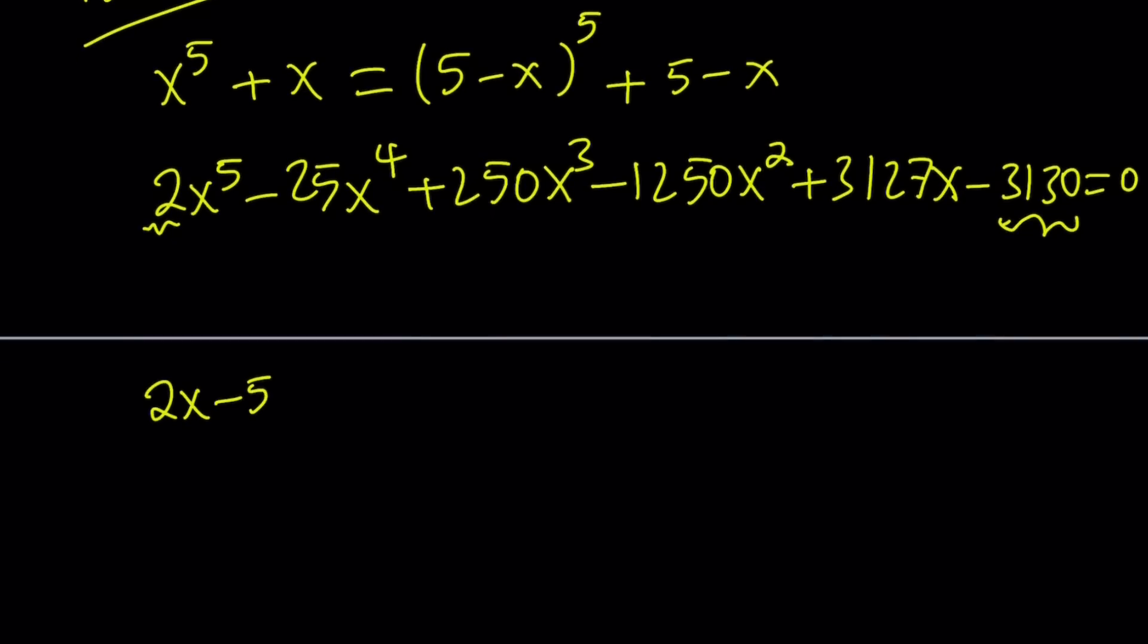you're going to get this in factored form like this: 2x minus 5 multiplied by x to the 4th minus 10x cubed plus 100x squared minus 375x plus 626 equals 0.